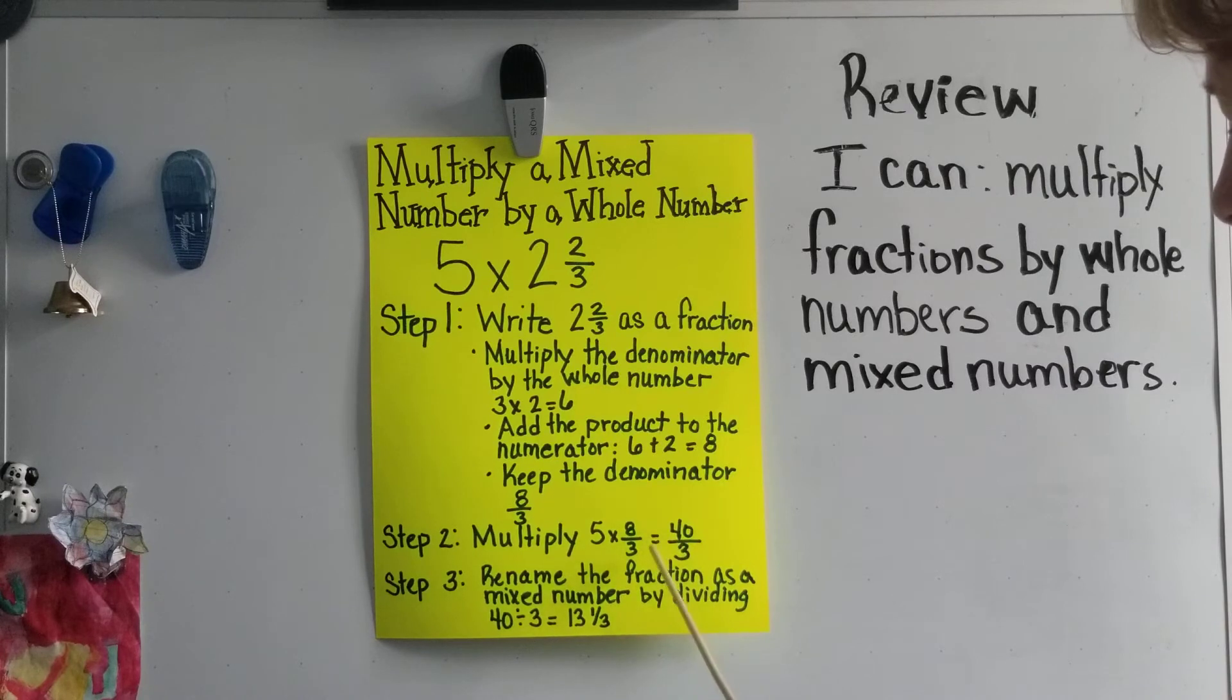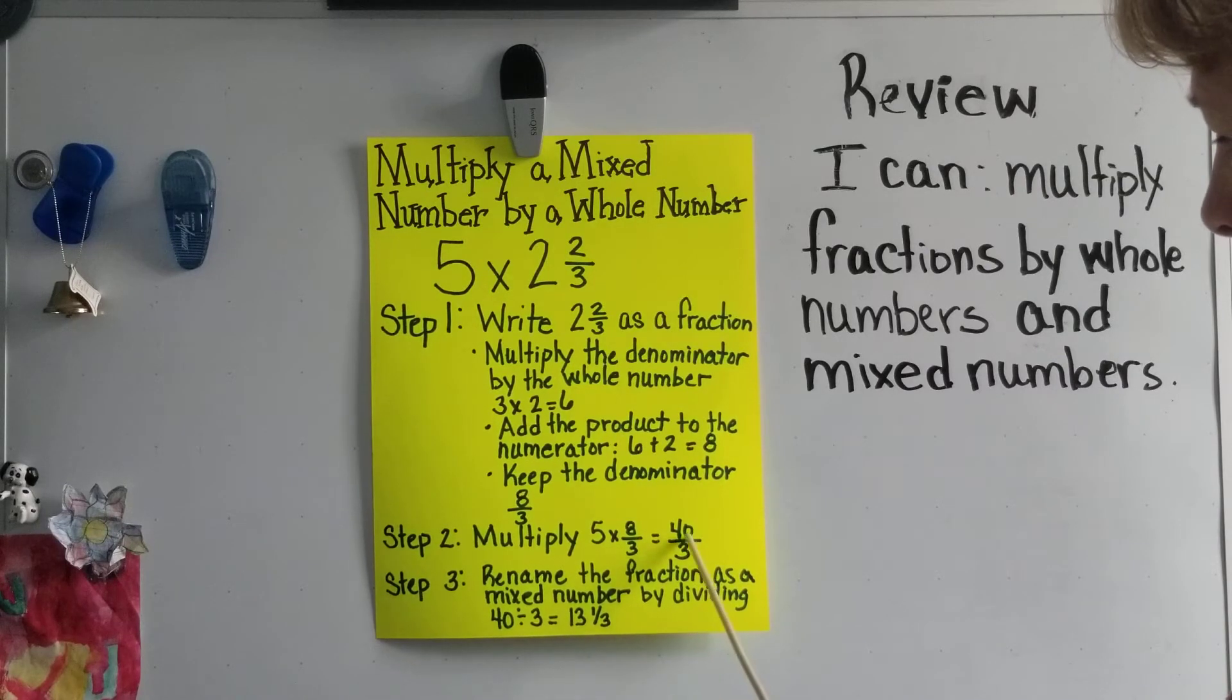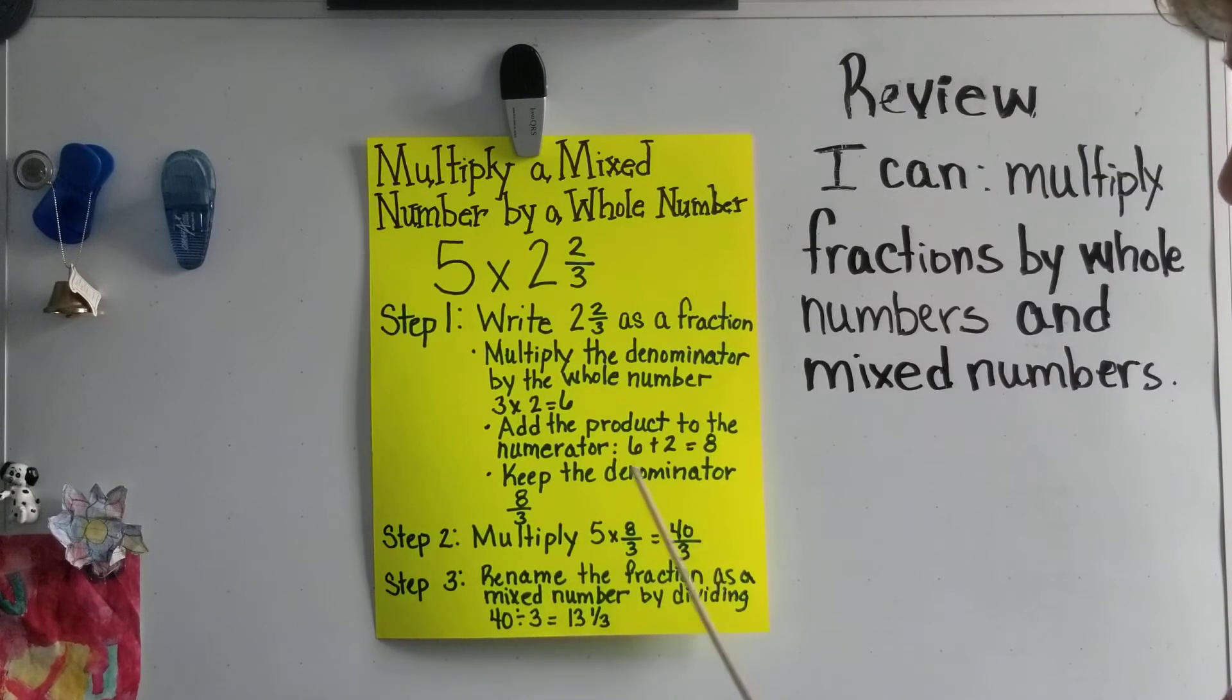So five times eight is 40, and we keep the denominator of three, so we have 40 thirds. And then our last step, which is step three, is to rename the fraction as a mixed number by dividing. So 40 divided by three.